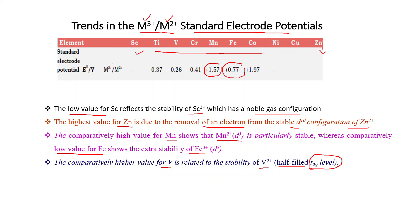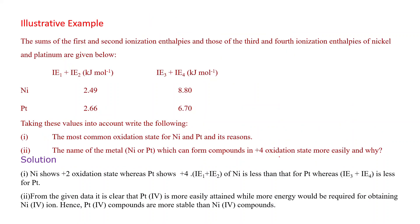What is the T2g level? There are five D orbitals which are degenerate — they have equal energy. But in the presence of a ligand, each D orbital splits into two parts: one part is known as the T2g level and the other is the Eg level. For more detail, we will discuss this in the next chapter on coordination compounds.